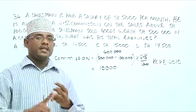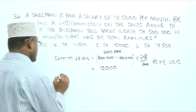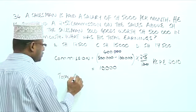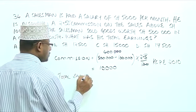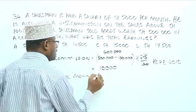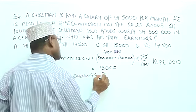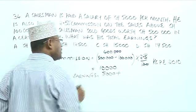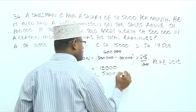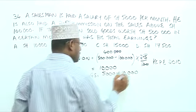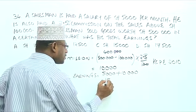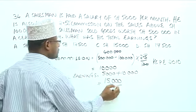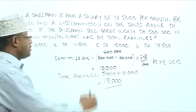So, total earnings, the salary plus the commissions. So, total earnings. It's going to be the commission of, let's start with the salary, because this is always there, whether he gets commission or not, plus the $10,000 commission, which is going to give us $15,000. And our answer is $7,000.